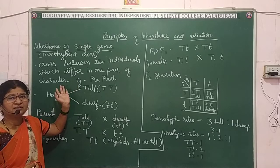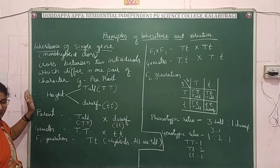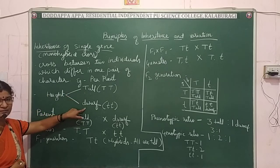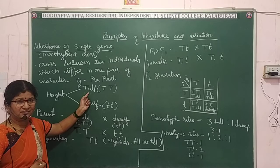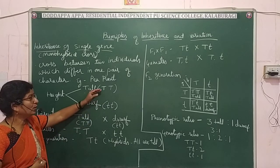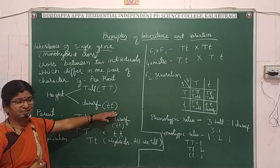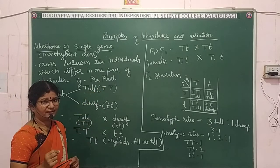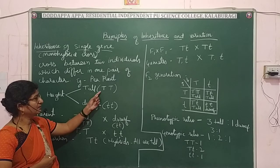This will be asked for three or five marks in the annual exam. Mendel first took one character at a time — here we take height, with two contrasting characters: tall and dwarf. The genes controlling these characters are indicated by capital TT for dominant (tall) and small tt for recessive (dwarf). We write the genes twice because the pea plant is diploid, so every character-controlling gene is present twice on homologous chromosomes.